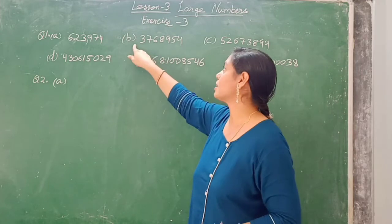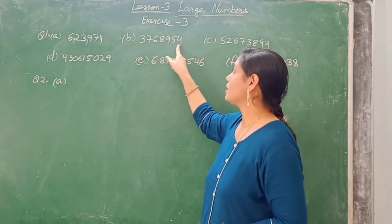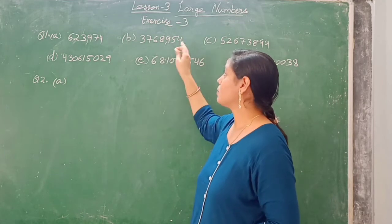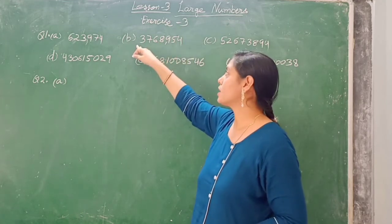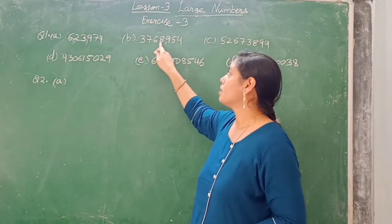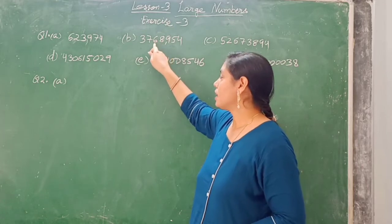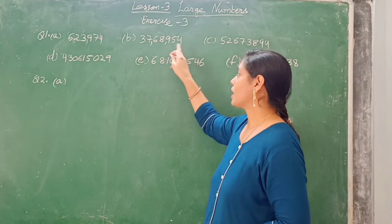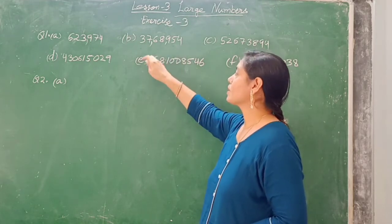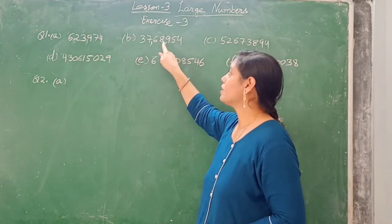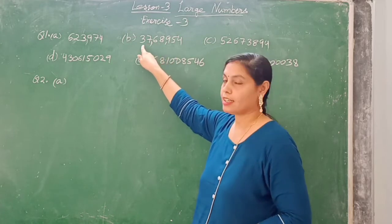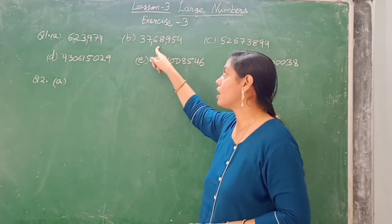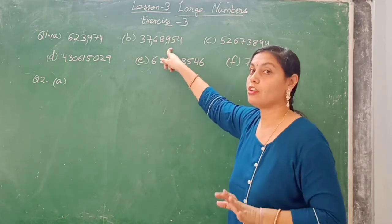Now the second number. Reading from right to left: ones, tens, hundreds — comma; then thousands, ten-thousands — comma; then lakhs, ten-lakhs — comma. So the answer is 37,68,954.